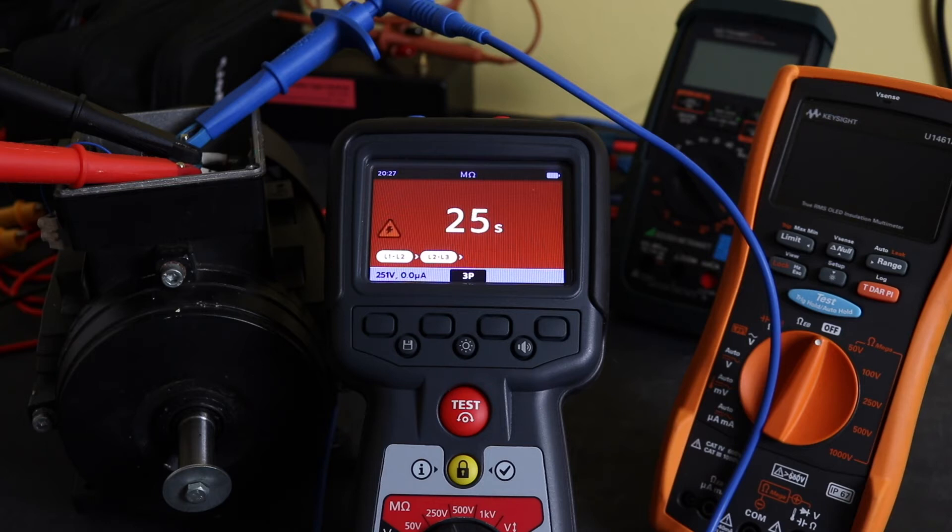So we're into the final 30 seconds of the test, and you can see how it operates. It does the first test of L1 to L2, flashing away the phase that's under test, then L2 to L3, and then finally L3 to L1. And you can see that despite the time function being set to 30 seconds, it still just does it as a one minute test. So there doesn't appear to be a way around that.